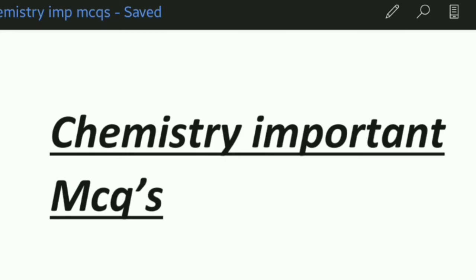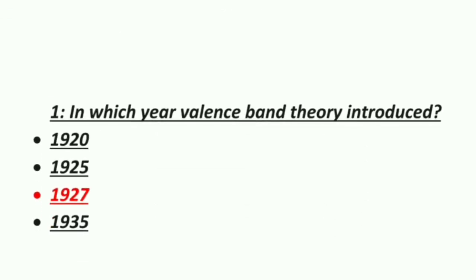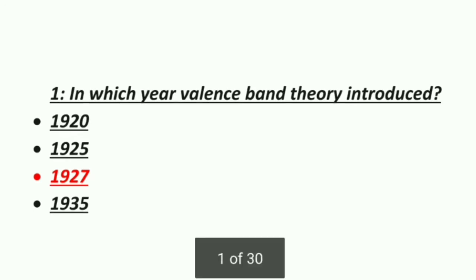Welcome everyone, hope you are doing well. Today we study about chemistry important MCQs for every competitive exam. Let's start. Our first MCQ is: in which year was the valence band theory introduced? Option 1: 1920, Option 2: 1925, Option 3: 1927, Option 4: 1935. The correct answer is 1927 — valence band theory was introduced in 1927.